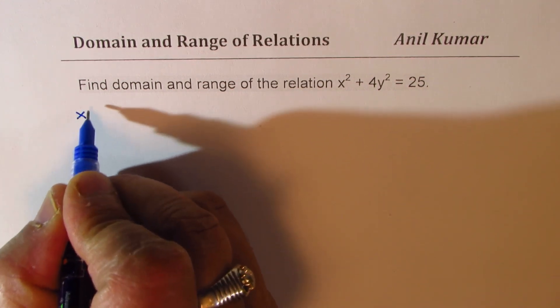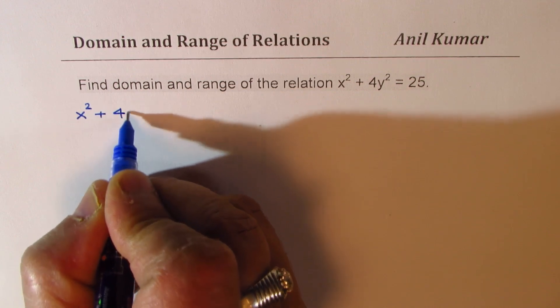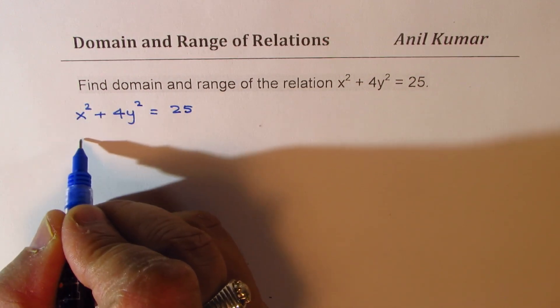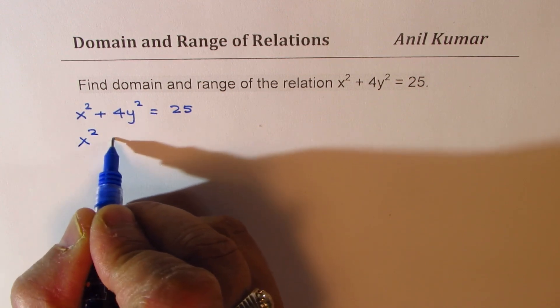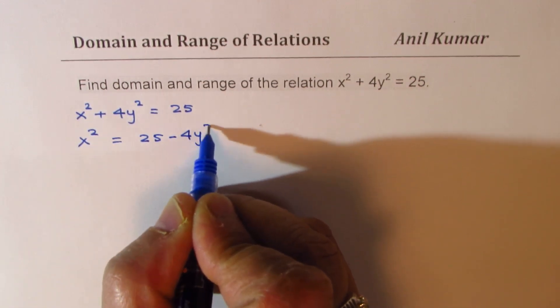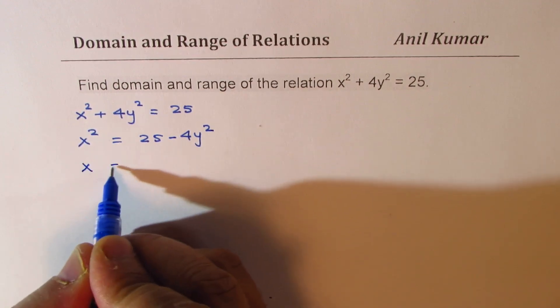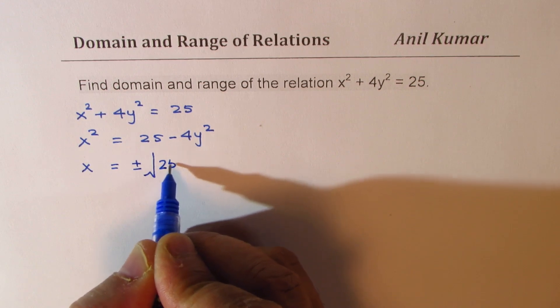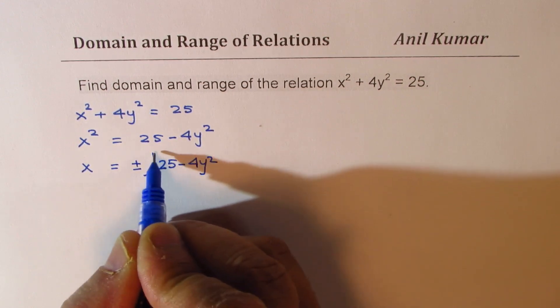So we are given x² + 4y² = 25. We can isolate x, we get x² = 25 - 4y², or x = ±√(25 - 4y²).